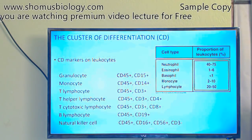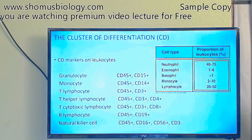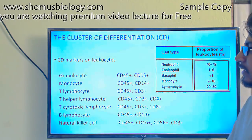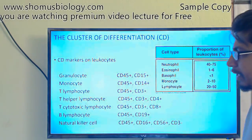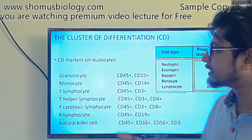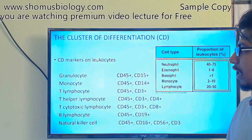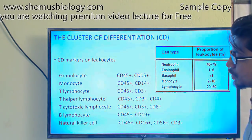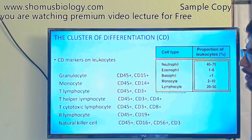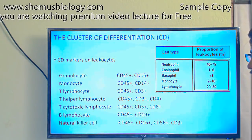Clusters of designation, or CD markers, are markers present on the surface of white blood cells or leukocytes. A specific chemical structure on the surface identifies the cell type — whether it is a B-cell, T-cell, or natural killer cell. For example, granulocytes have CD45 and CD15 markers; monocytes have CD45 and CD14; T-lymphocytes have CD45 and CD3; T-helper lymphocytes have CD4; and cytotoxic T-cells have CD8 on their surface.